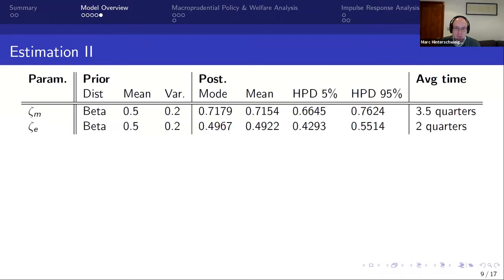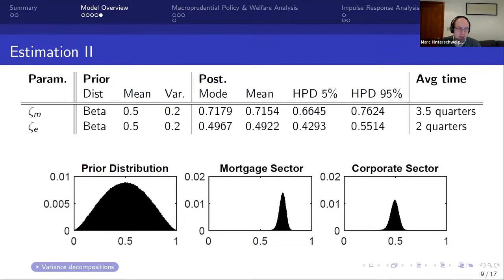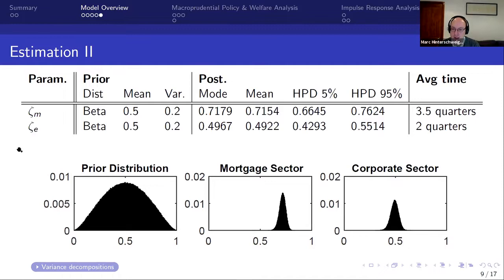Two key estimated parameters are the stickiness parameters for mortgage and corporate lending. The posterior mode gives a stickiness parameter of approximately 0.72 for mortgage lending — similar to the Calvo price stickiness parameter — and 0.5 for corporate lending, corresponding to adjustment times of roughly three and a half quarters for mortgage lending and two quarters for corporate lending, consistent with the earlier charts.